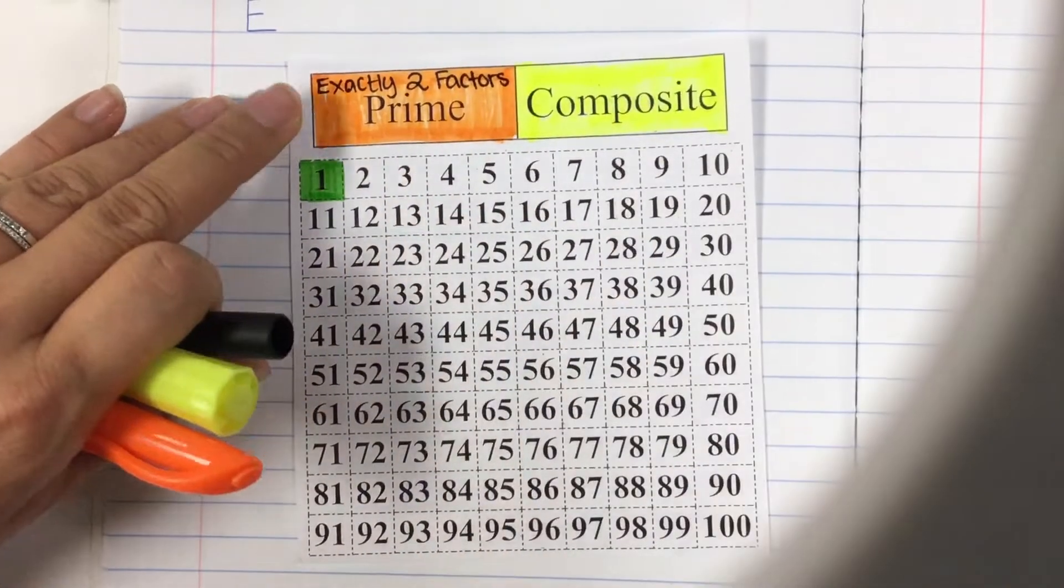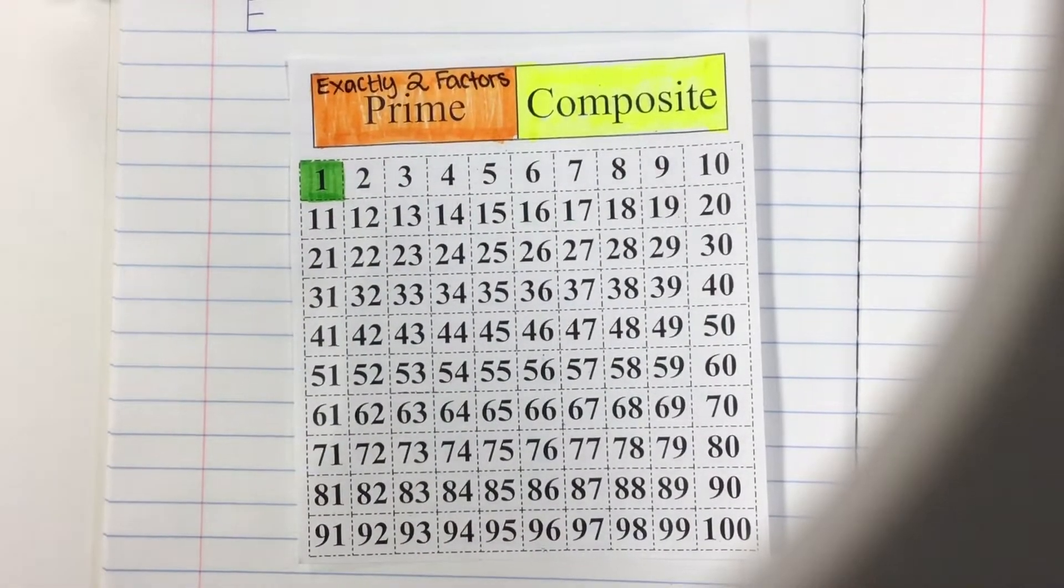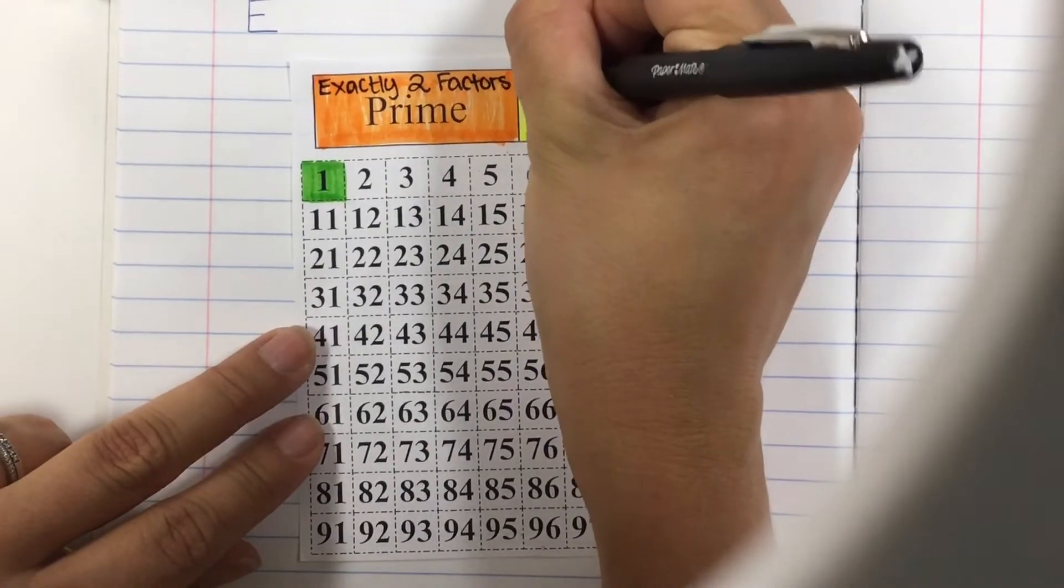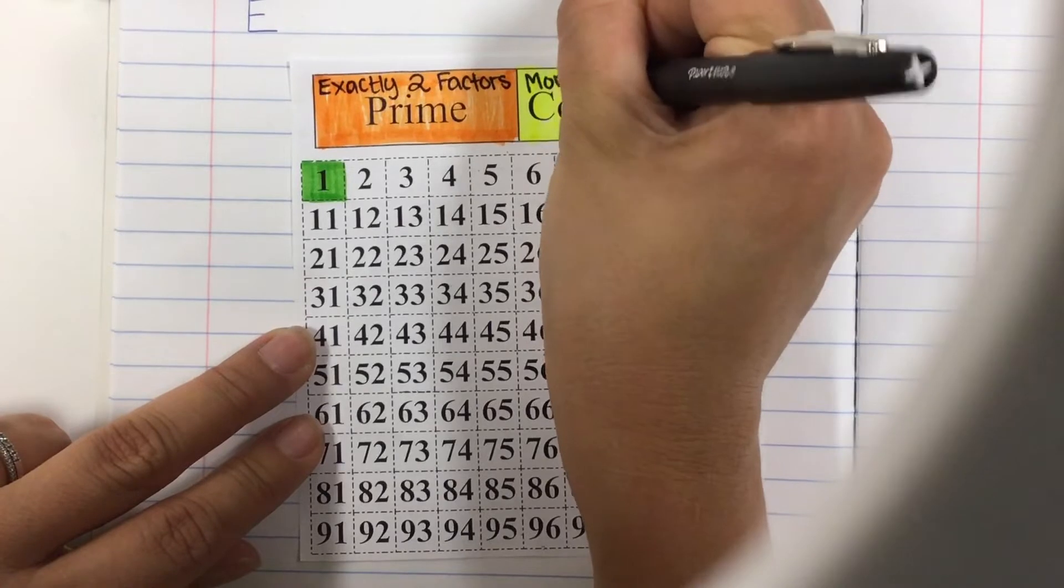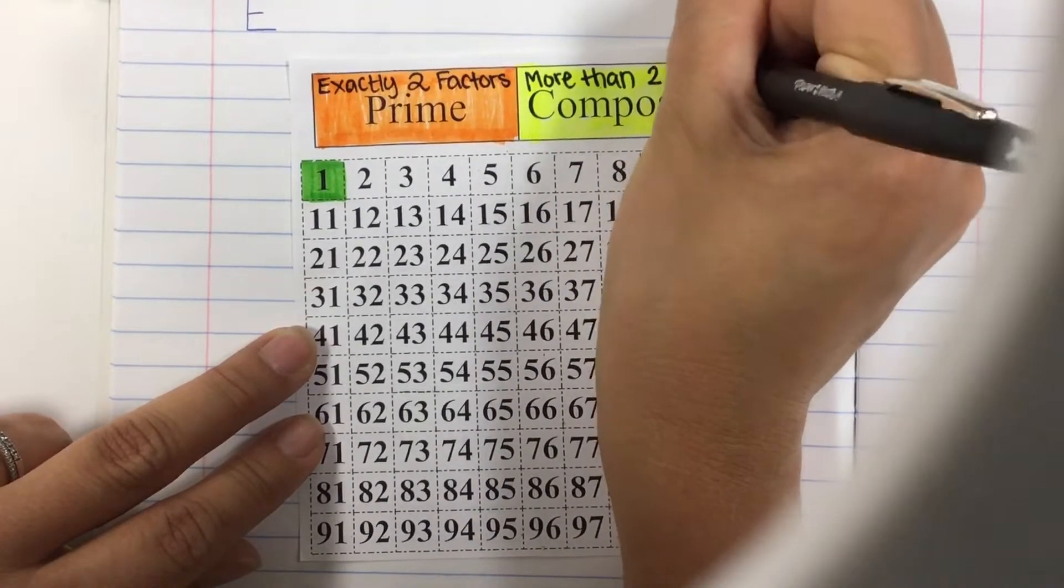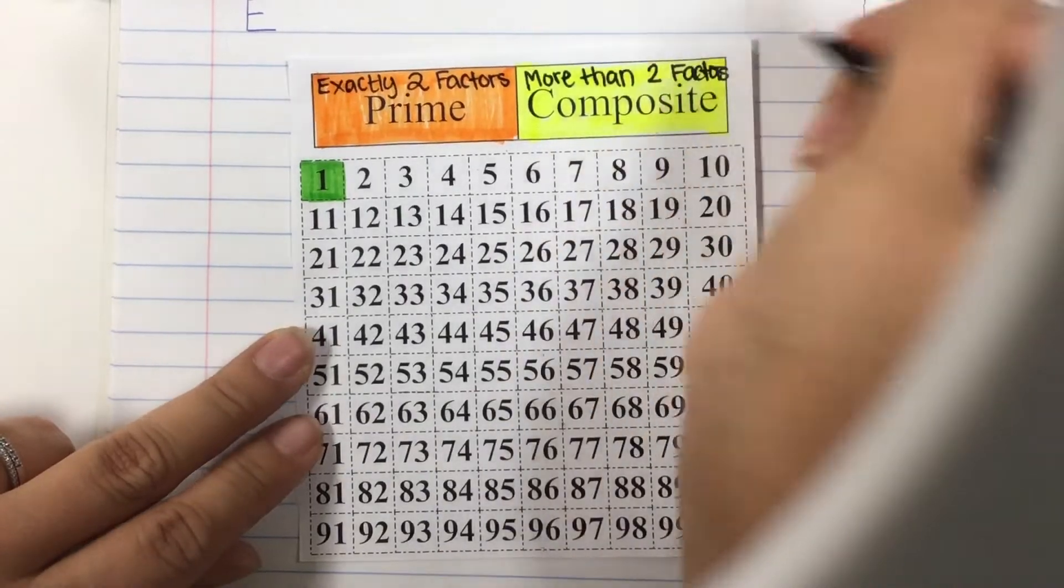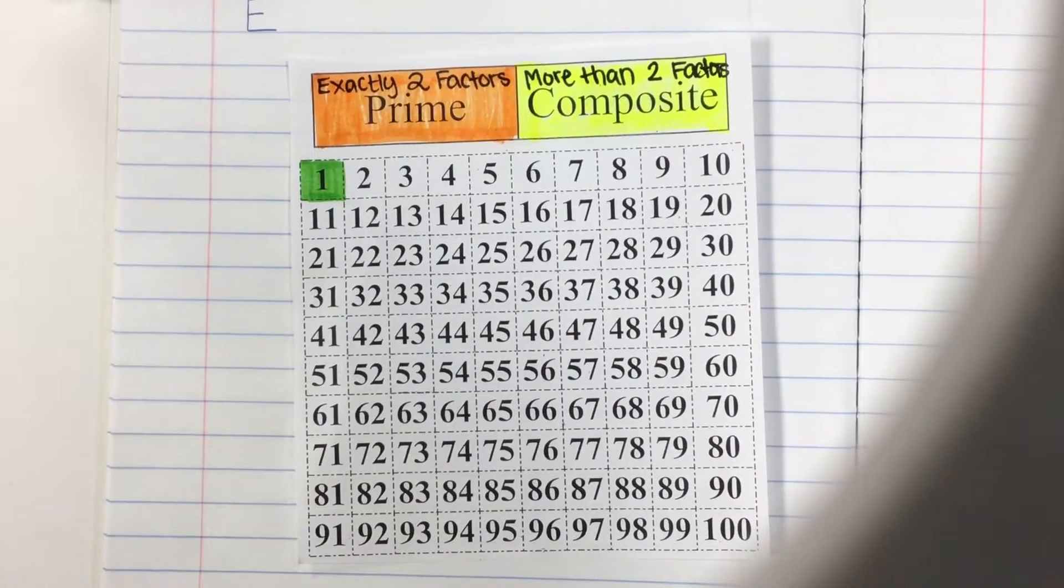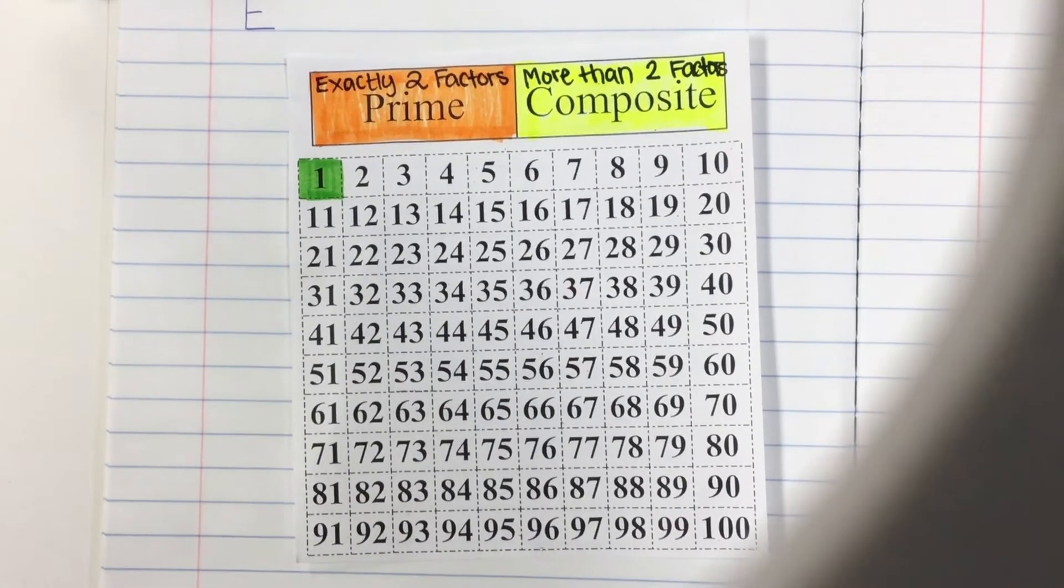That means that composite numbers have more than two factors. Go ahead and get that written in your boxes so that you have a good understanding of what prime numbers are and what composites are. Now we're going to discover.